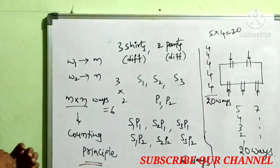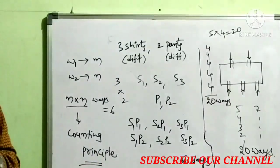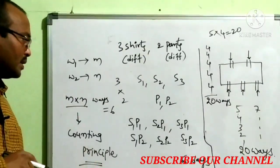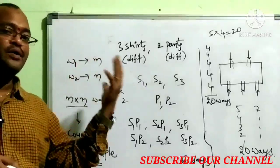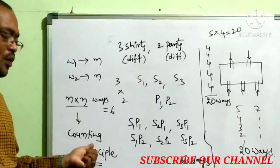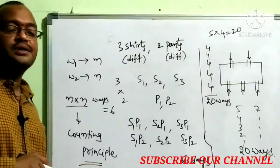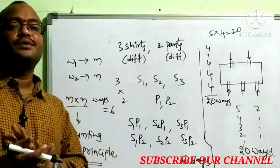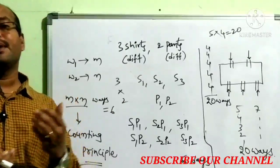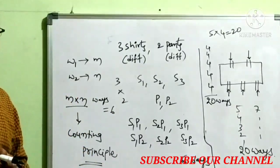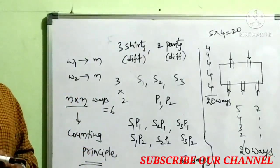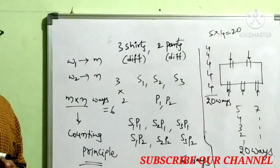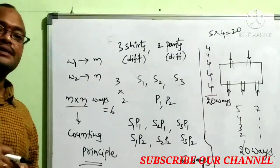We can use a lot of permutations and combinations. The first prerequisite is factorial notation, and the next is the counting principle. If we are perfectly able to do these, we can start permutations and combinations. In the next class, we will learn in depth about permutations. Thank you.